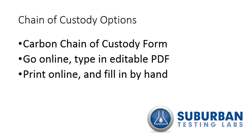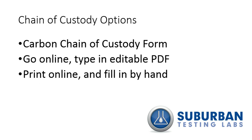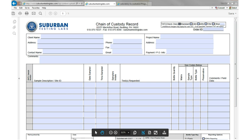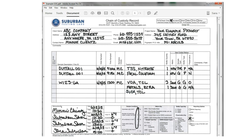There are three options you can utilize when choosing a Chain of Custody form. You can fill out a carbon Chain of Custody form provided to you with your sample containers by your project manager, or you can go to our website and find an editable PDF version you can directly type into. You can also print out that blank PDF version and handwrite it in the field.